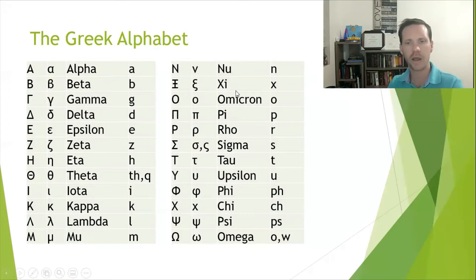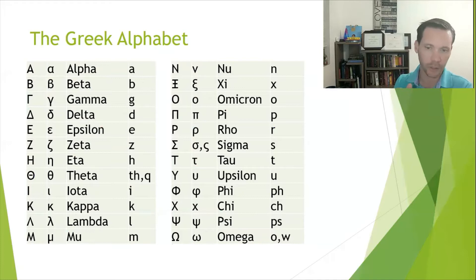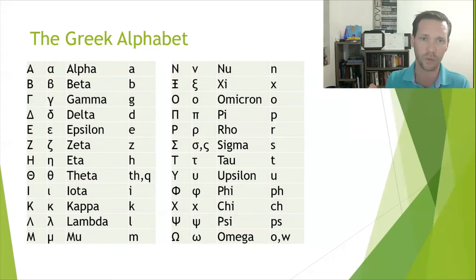We've already talked about nu, which is the 'n' sound, capital N. Xi is another one — there's really no easy way to remember it. The lowercase looks like a capital E, and the capital letter is a capital I with a line through. There's no mnemonic trick; I just had to memorize it. If you think of an easy way, put it in the comments. Xi is going to say 'x.'